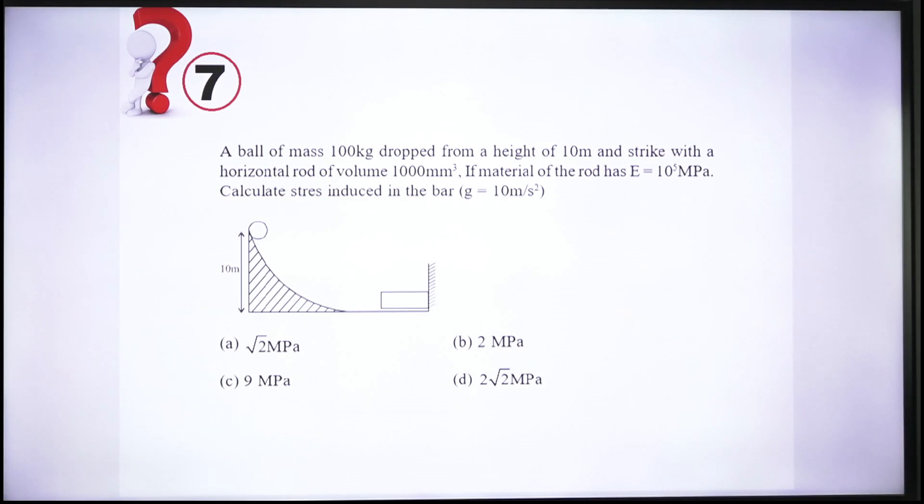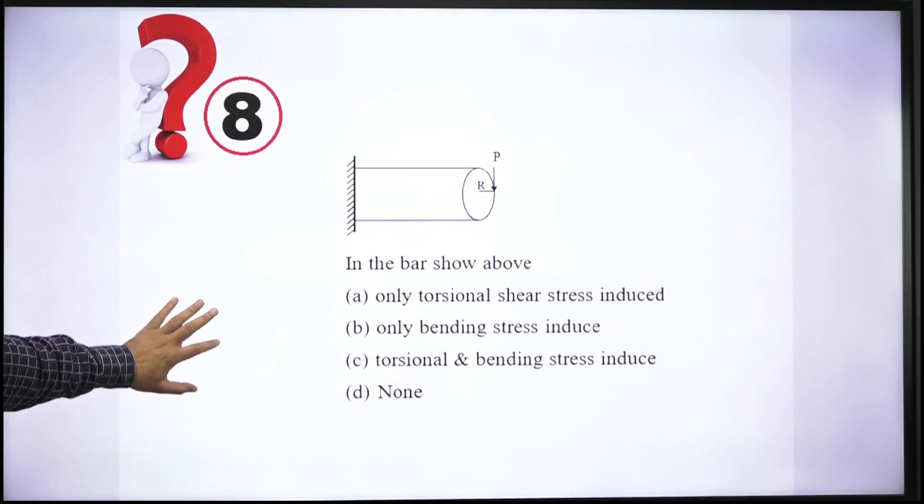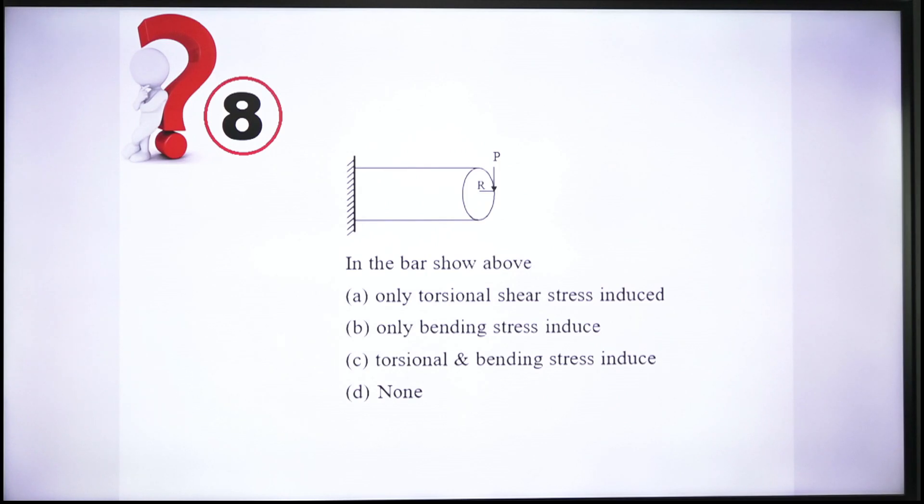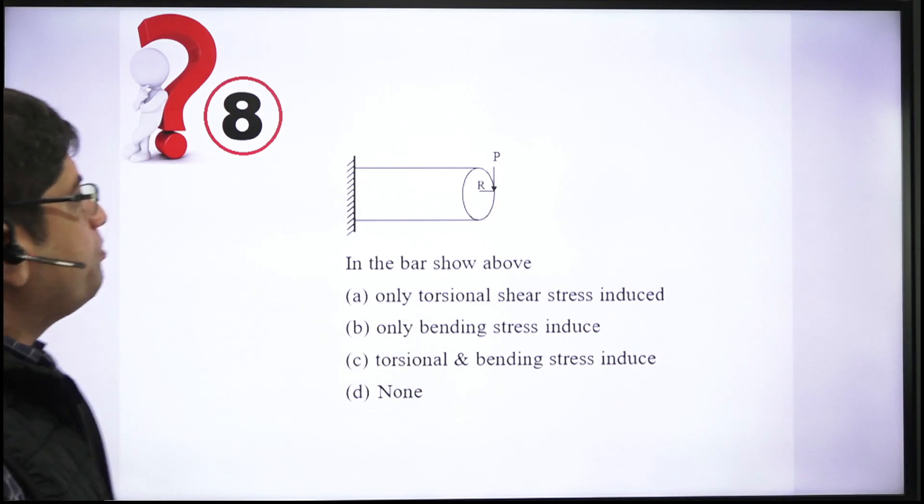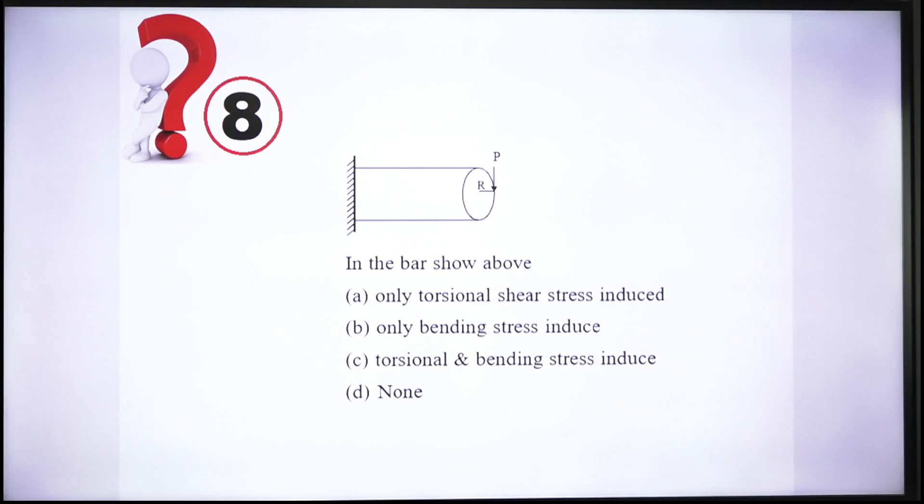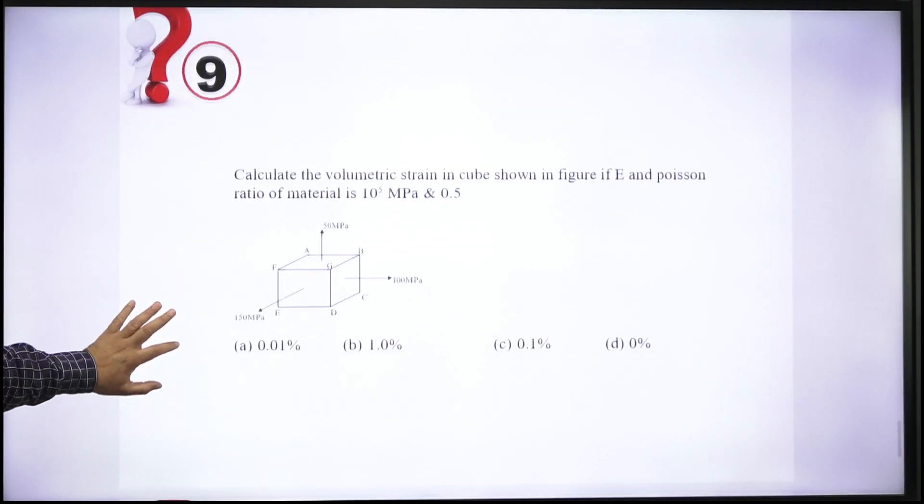Next question: There is a bar, circular cross-section bar, which is a cantilever, and it is subjected to a load P at its circumference like this. You have to tell what kind of stresses are induced in it. You know the meaning of this and what stress is induced in this.